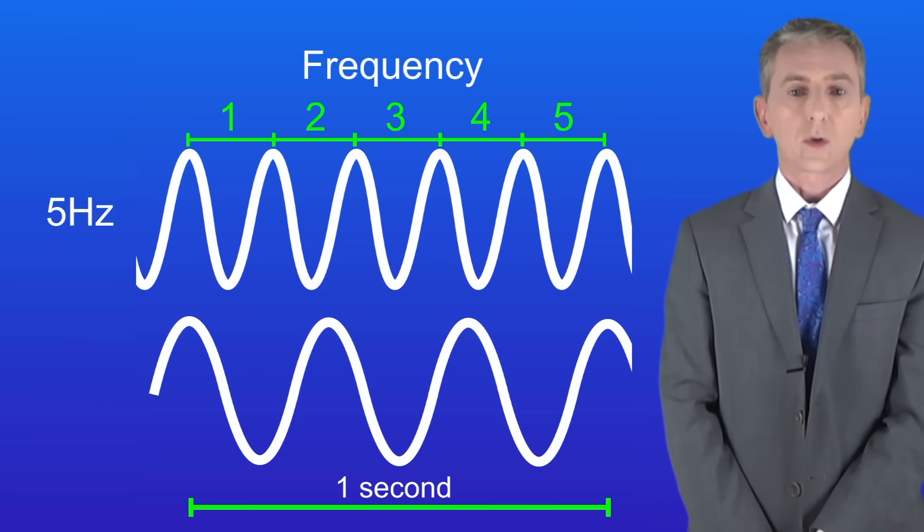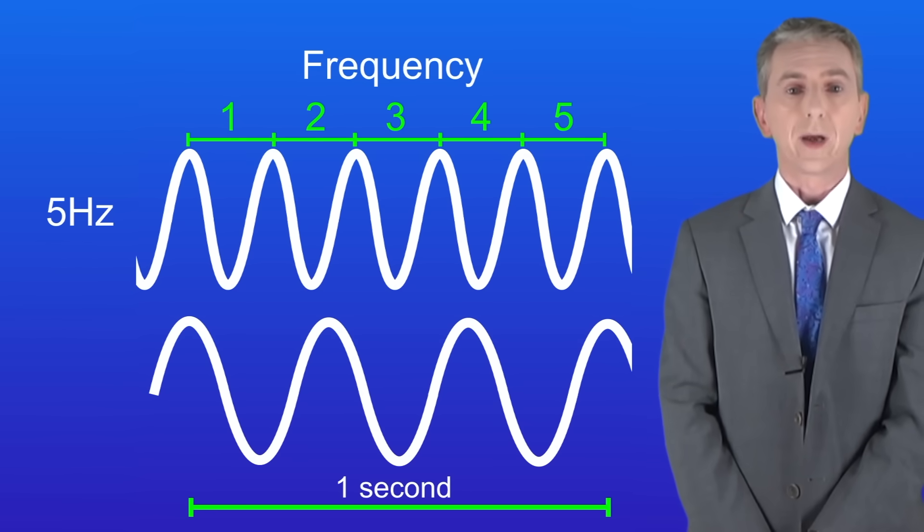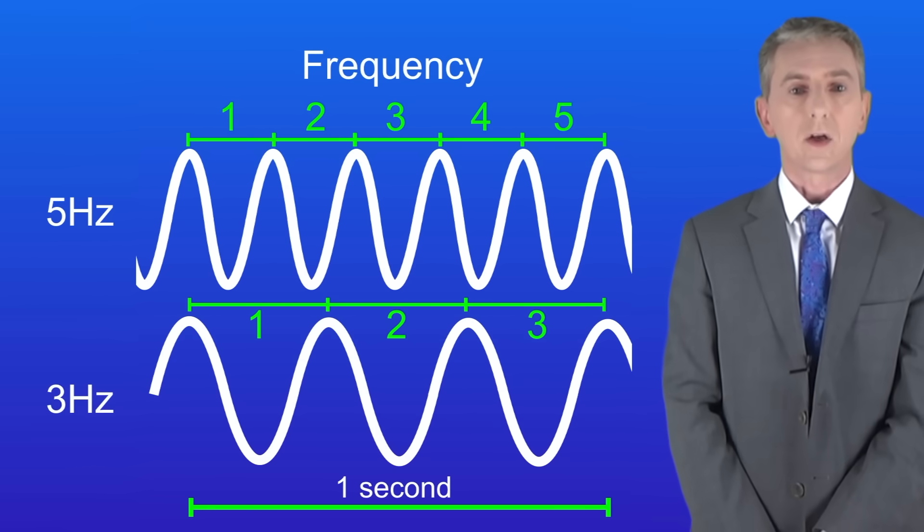Here's another wave and this one's got a longer wavelength. So again, to work out the frequency we need to count the total number of waves. In this case we've got one, two, and three waves in one second. So the frequency is three hertz.